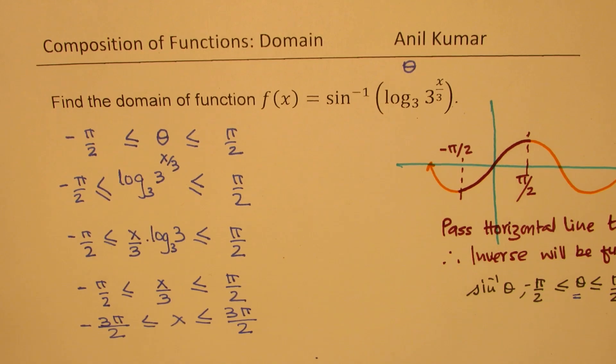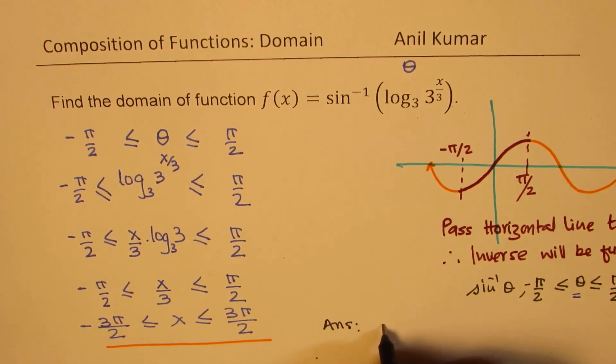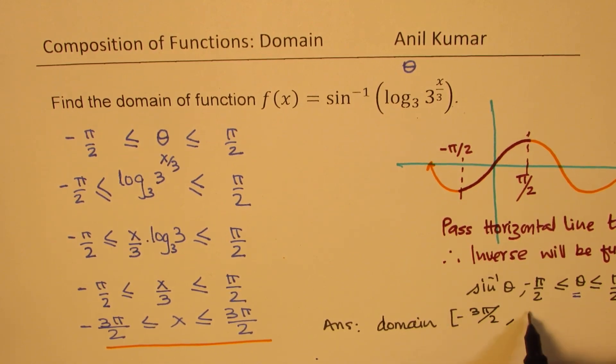Is that clear? So that is our answer. So for the given function, the domain is between minus 3 pi by 2 to plus 3 pi by 2. Perfect.